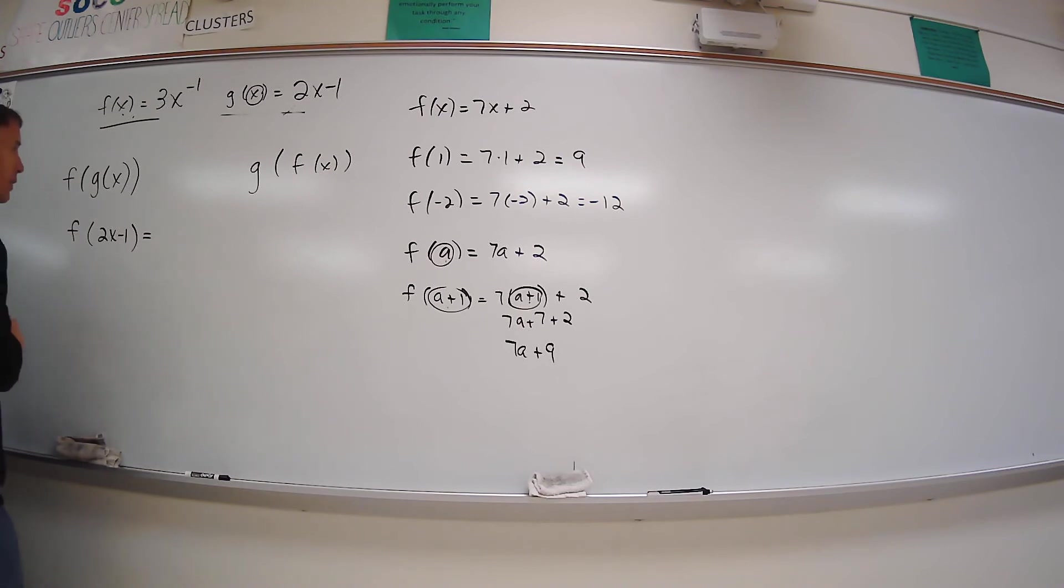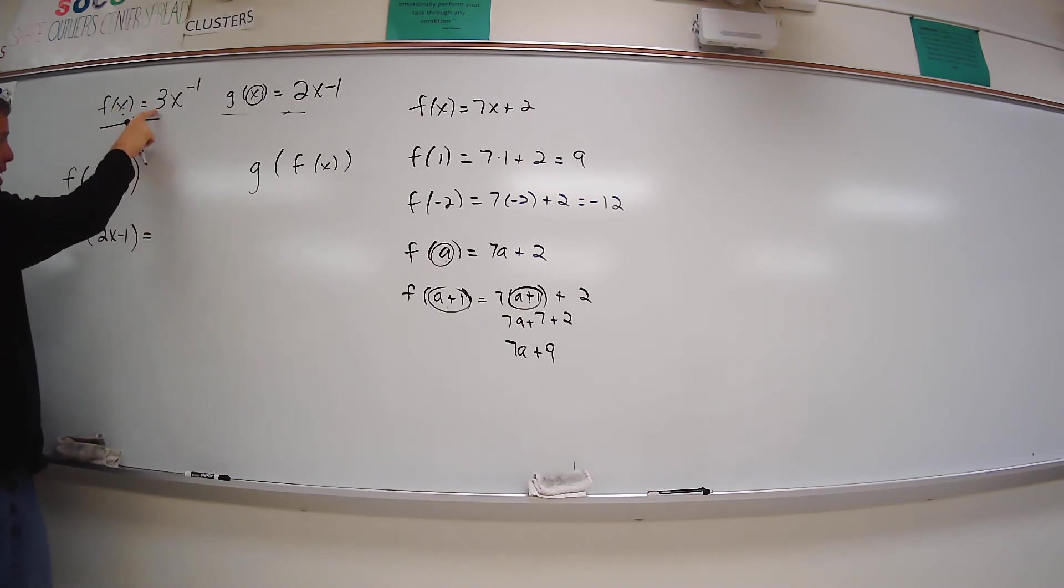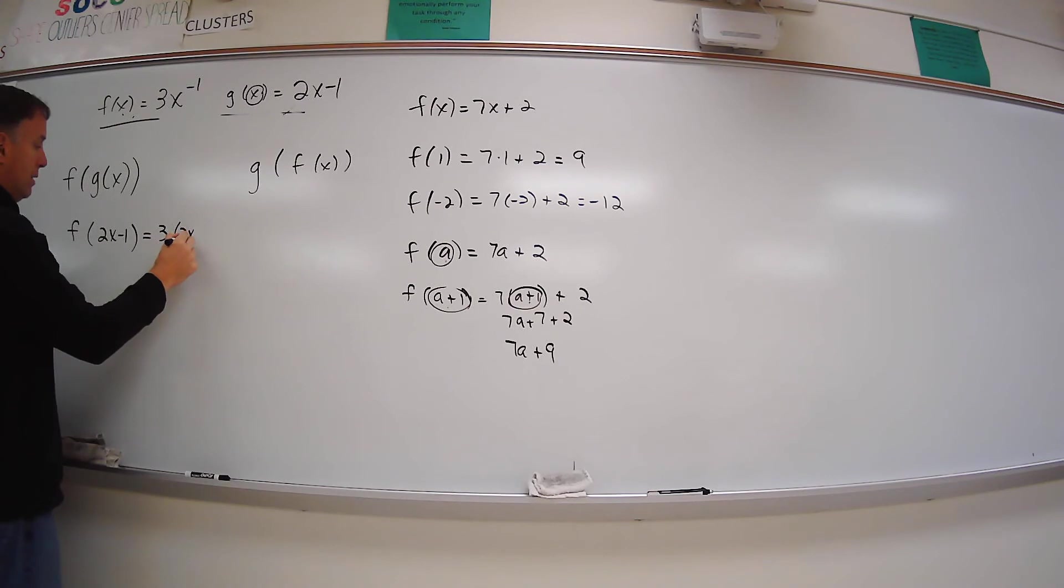And so here, in my f function, it says that whatever is in parentheses, I multiply it by 3, but I take it to the negative 1 power. So this is going to be 3 times 2x minus 1 to the negative 1 power.